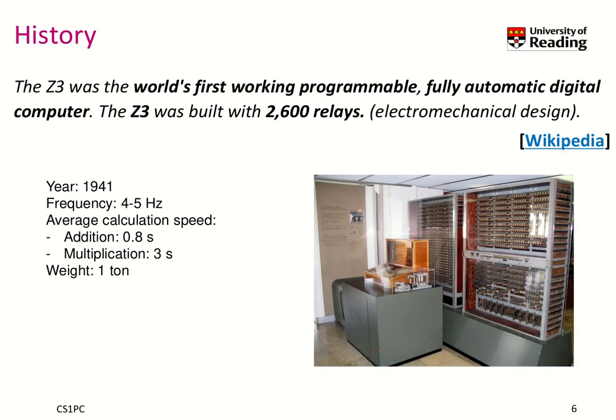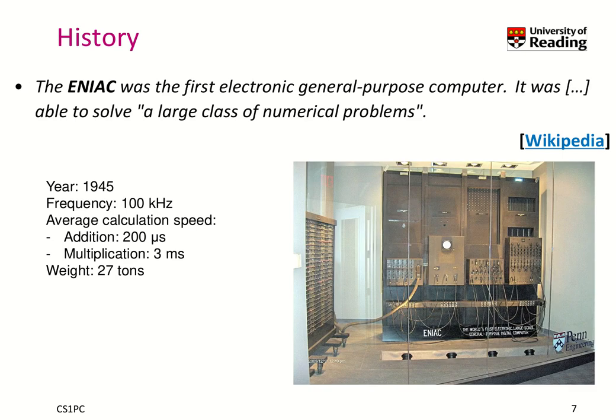Let me give a little history. The Z3 was the world's first working, fully automatic digital computer. It was built with an electromechanical design using relays, and in 1941 it had a frequency of 4 to 5 hertz — meaning 4 to 5 on/off cycles triggered computation. An addition took about 0.8 seconds, a multiplication 3 seconds, and it weighed about 1 ton. Another milestone was the ENIAC, an electronic general-purpose computer that could solve a large class of numerical problems. A couple of years later, it had 100 kilohertz frequency, took about 200 microseconds for an addition and 3 milliseconds for a multiplication — roughly 300 multiplications per second — but it weighed about 27 tons.